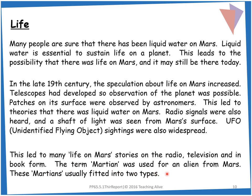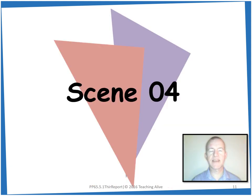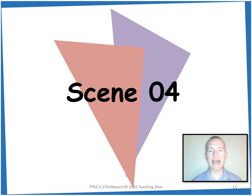Radio signals and animals were also heard, and a shaft of light was seen from Mars's surface. UFO — unidentified flying object — sightings were also widespread. This led to many life on Mars stories on the radio, television, and in book form. The term Martian was used for an alien from Mars. These Martians usually fitted into two types. To set us up for our alien descriptions, we'll watch our next animation: Scene 4. If you haven't seen scenes 1 to 3, then you need to go to literacy lesson 1 in the unit on the Teaching Alive website.